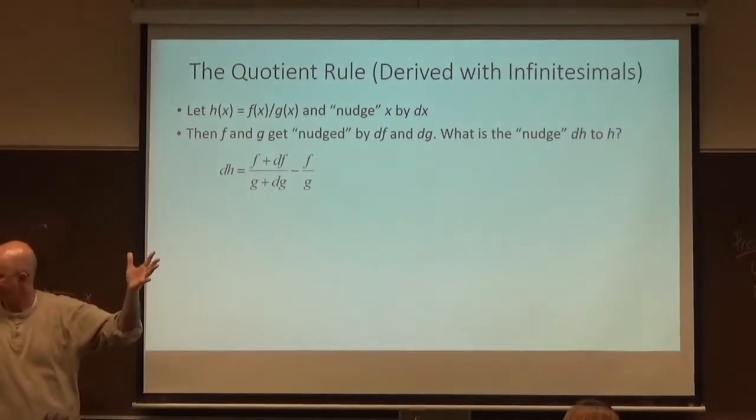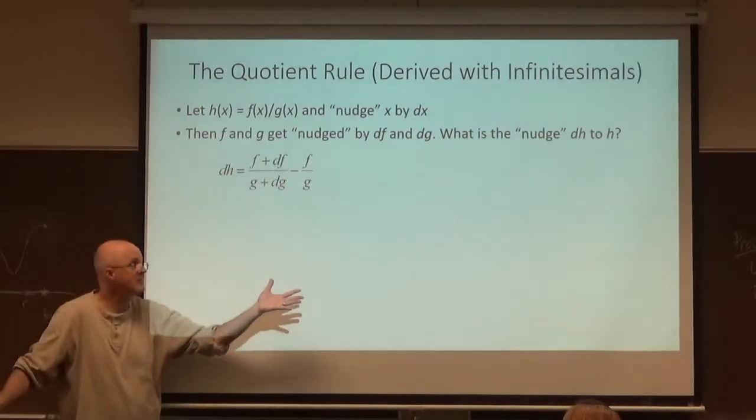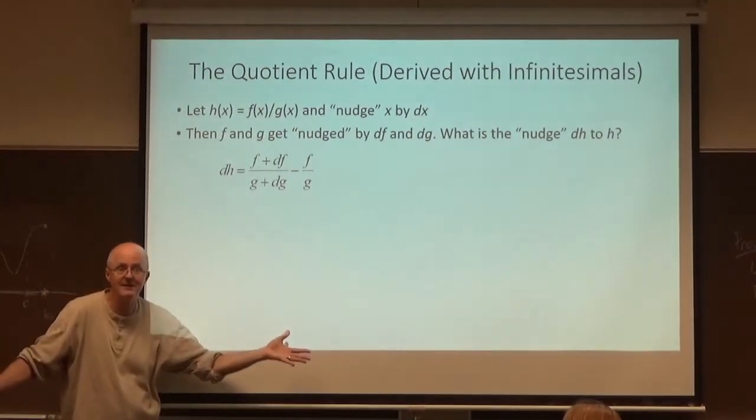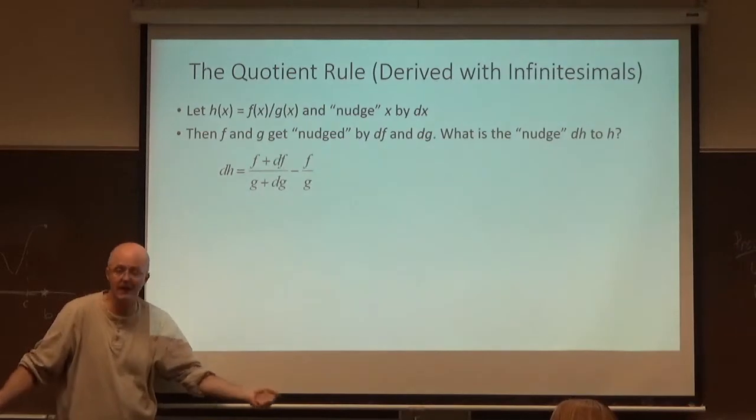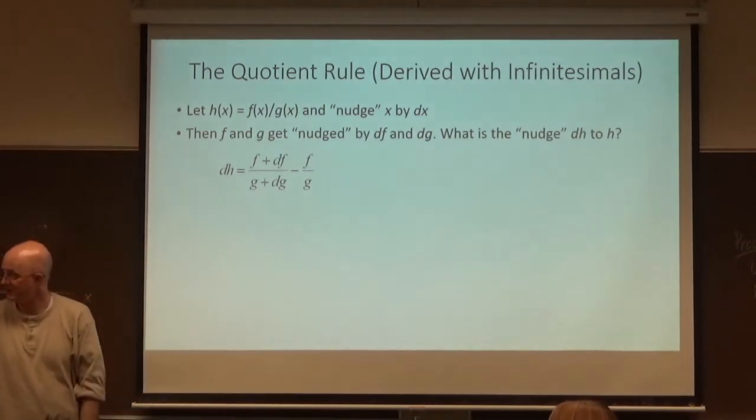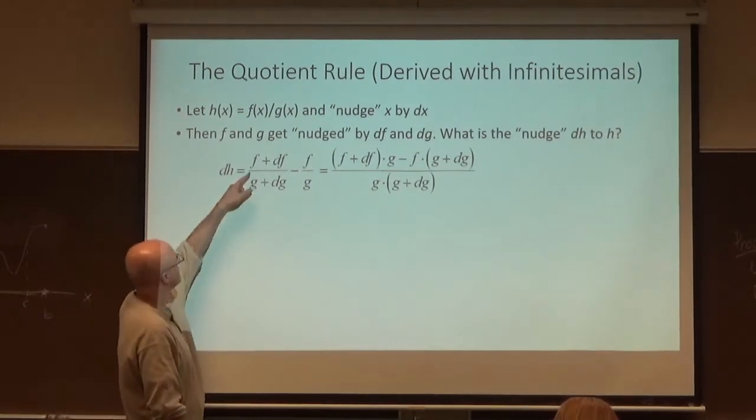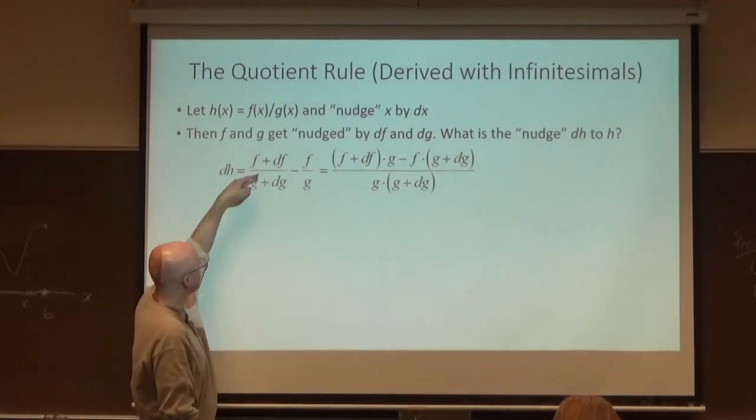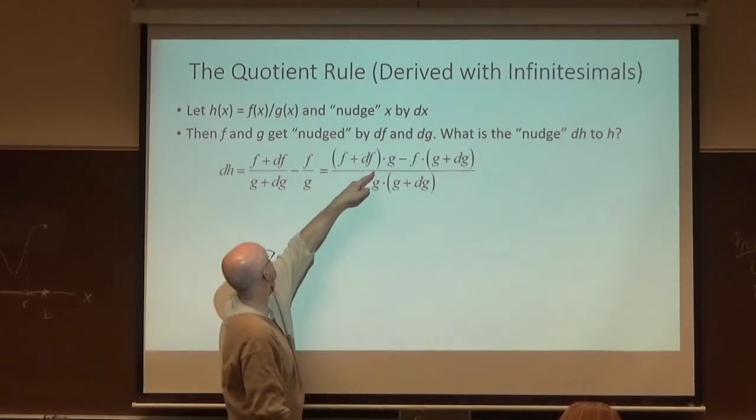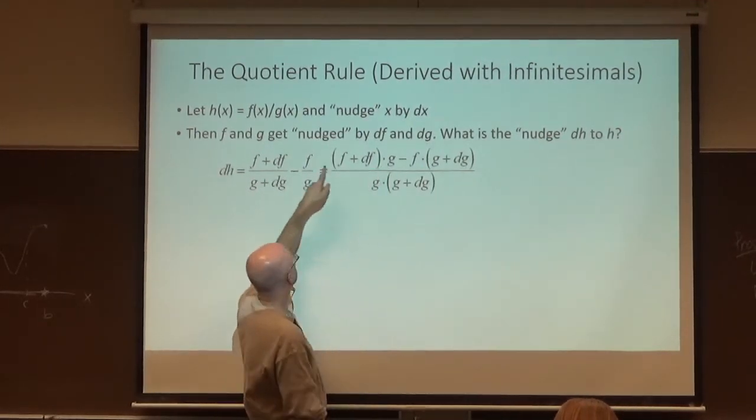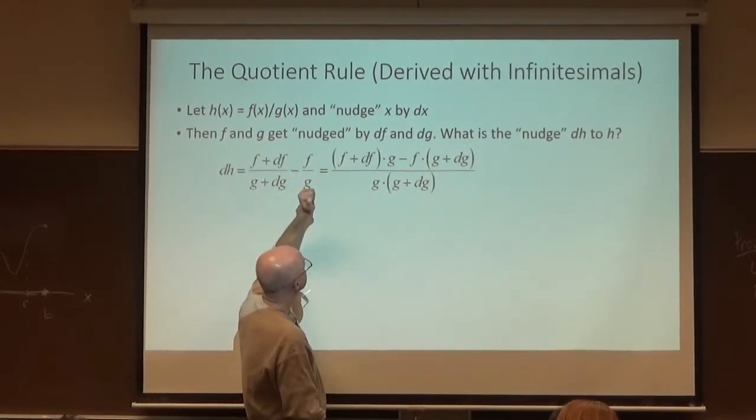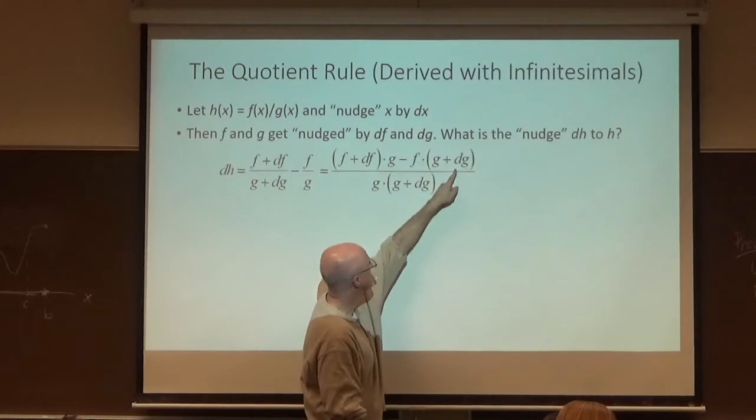What should you do? Do the only thing you can do here. Subtract the fractions. Which means you need a common denominator of g times in parentheses g plus dg. You'd have to multiply this fraction on the top and bottom by g over g. That's why you get the extra g right there. And you'd have to multiply this fraction on the top and bottom by g plus dg. That's why you get the extra g plus dg right there.